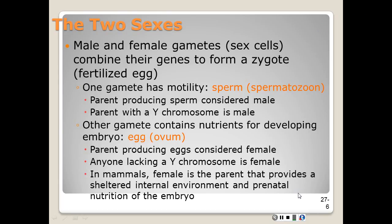The zygote is basically formed when the male and female sex cells combine with each other — that's how we form this fertilized egg, also called the zygote. One gamete has mobility, which is the sperm, and it is able to move around and get from place to place very quickly. The male is the one that's going to produce the sperm, and the male is the one that has that Y chromosome. The egg contains all the nutrients necessary for the embryo to be developed.